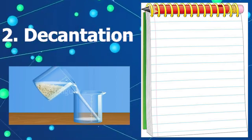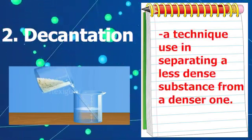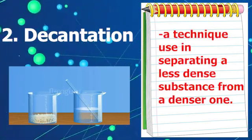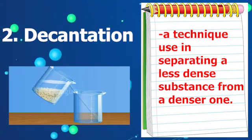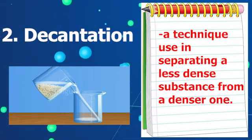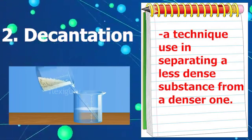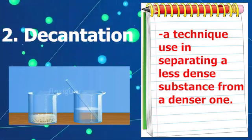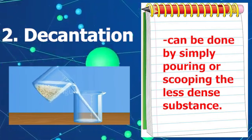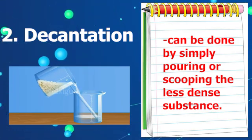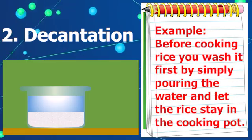Number two: decantation. This is a technique used in separating a less dense substance from a denser one. In the process of decantation, the mixture is left undisturbed. It can be done by simply pouring or scooping the less dense substance.